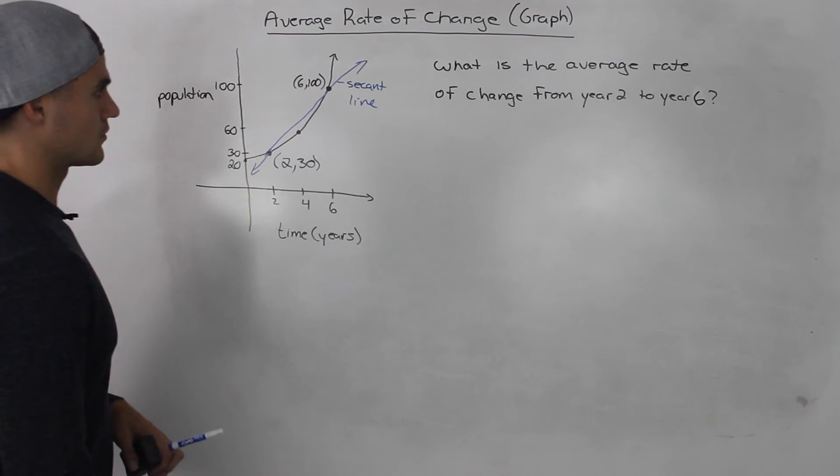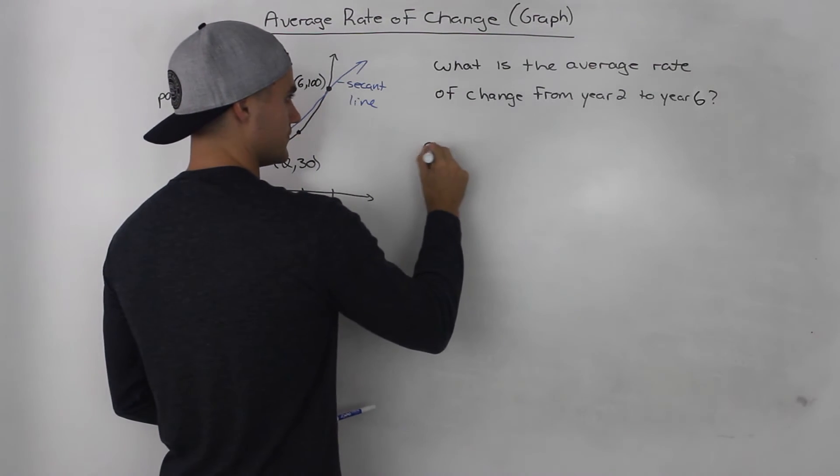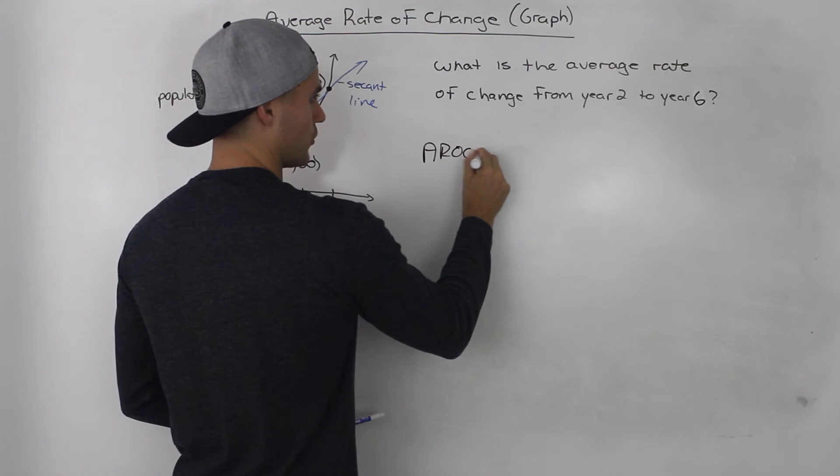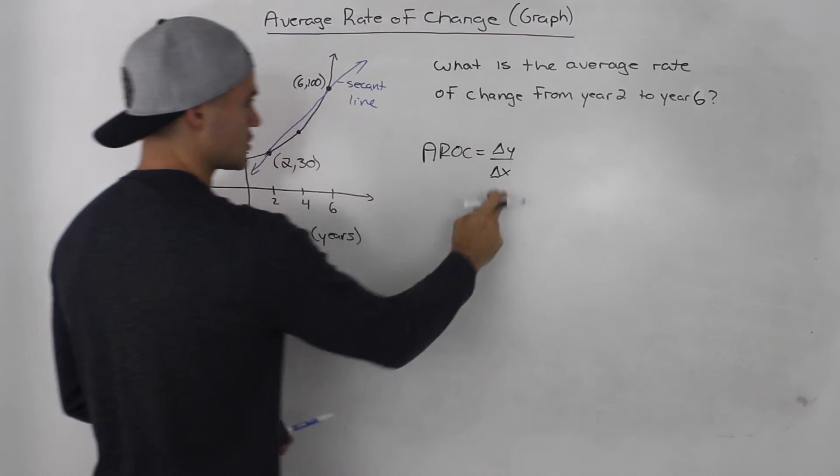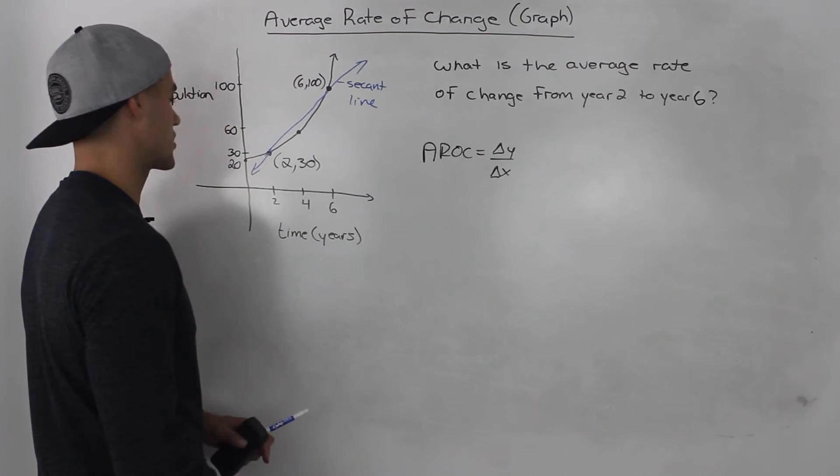So average rate of change, if you remember the formula, is delta y over delta x: how much the dependent variable changes over how much the independent variable changes.